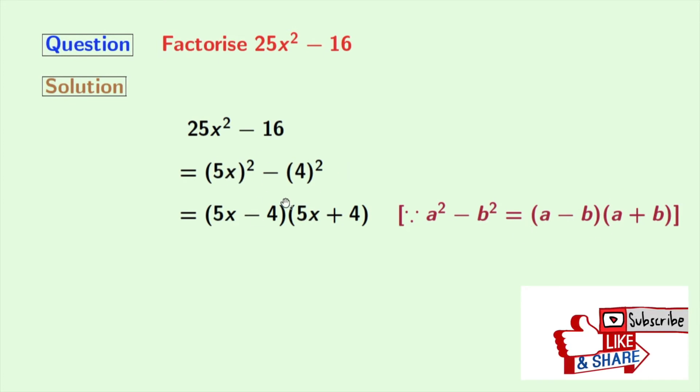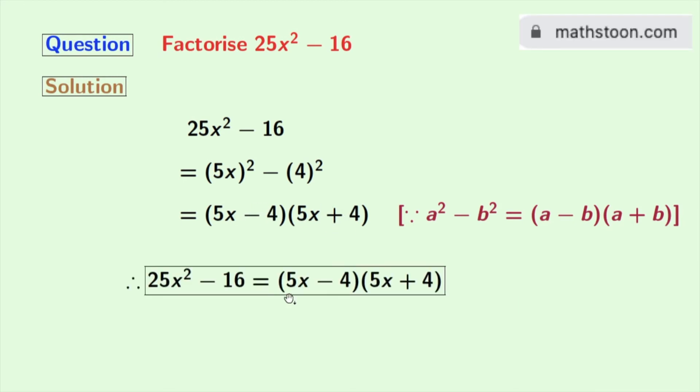Doing so, we get 5x minus 4 times 5x plus 4. So finally we get 25x square minus 16 is equal to 5x minus 4 times 5x plus 4.